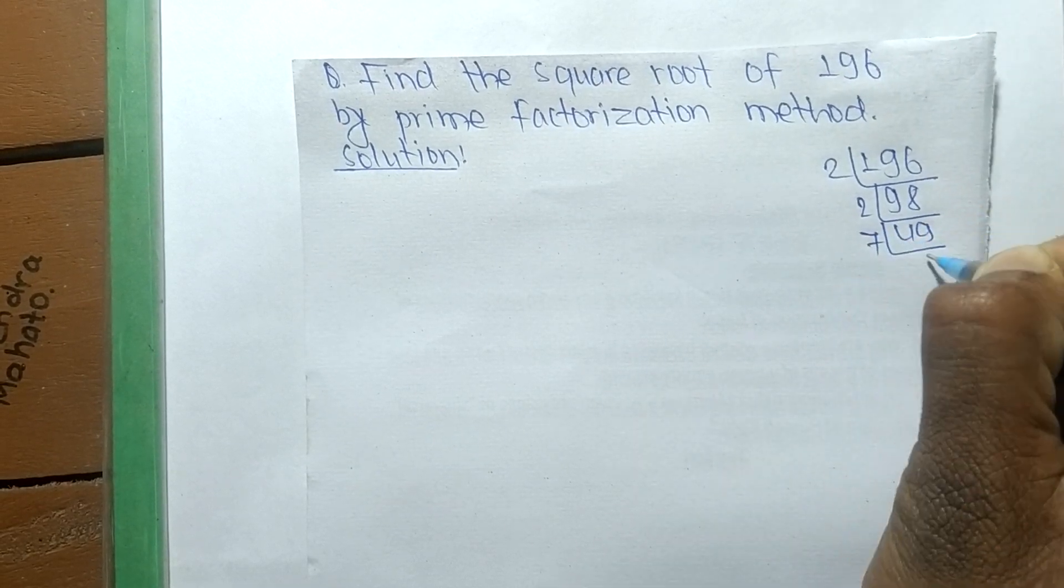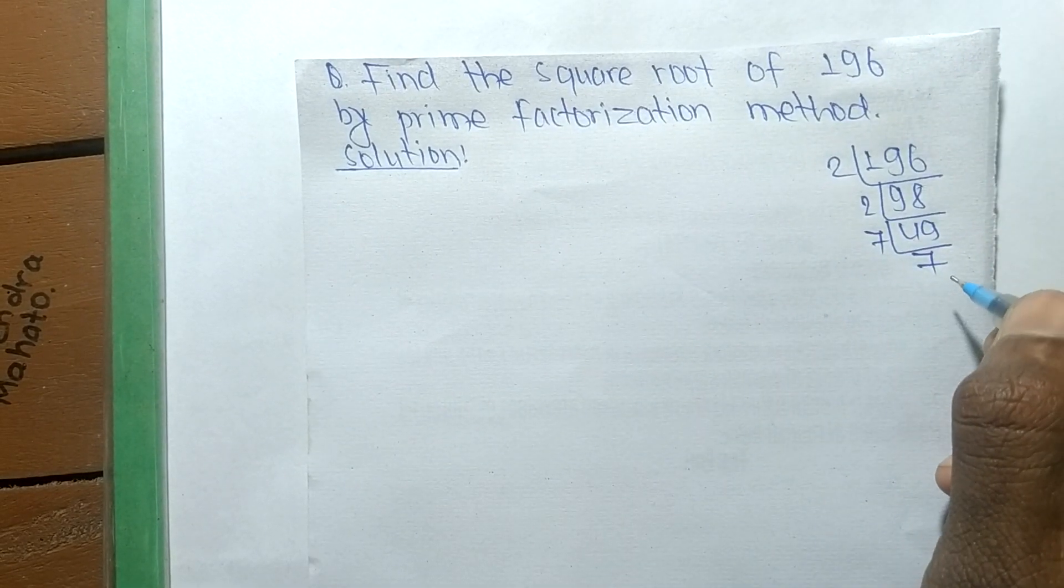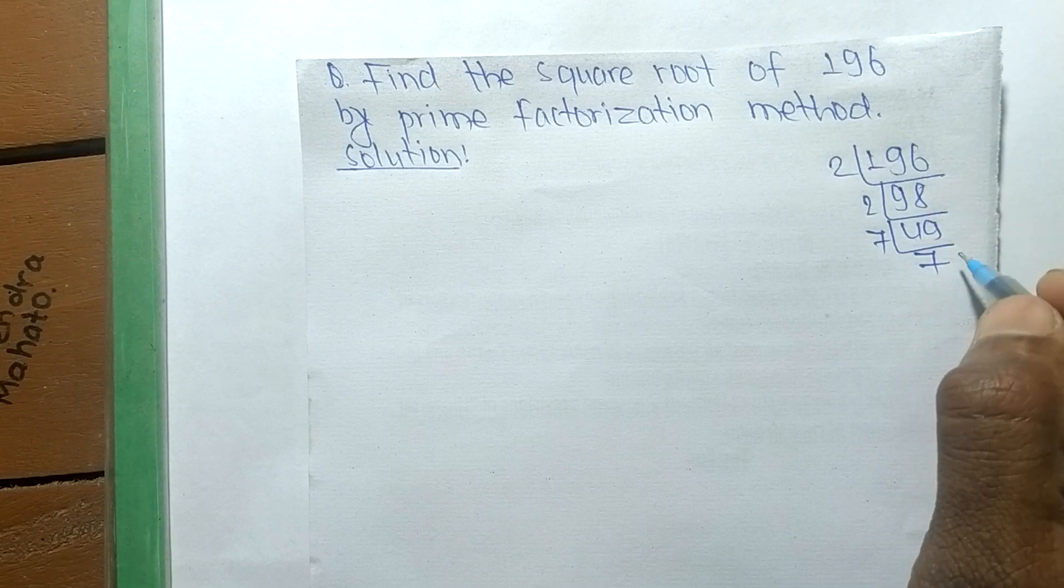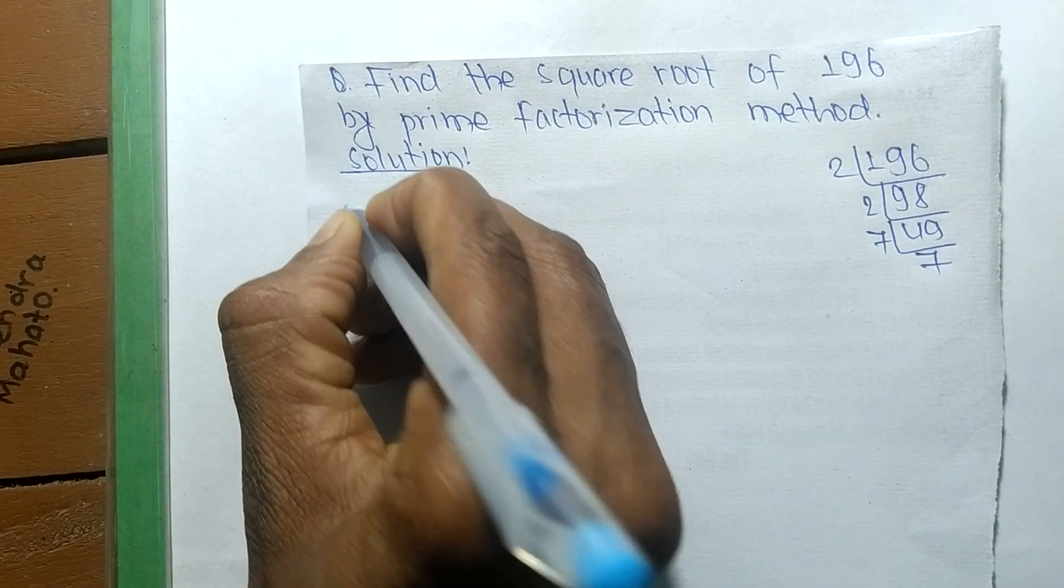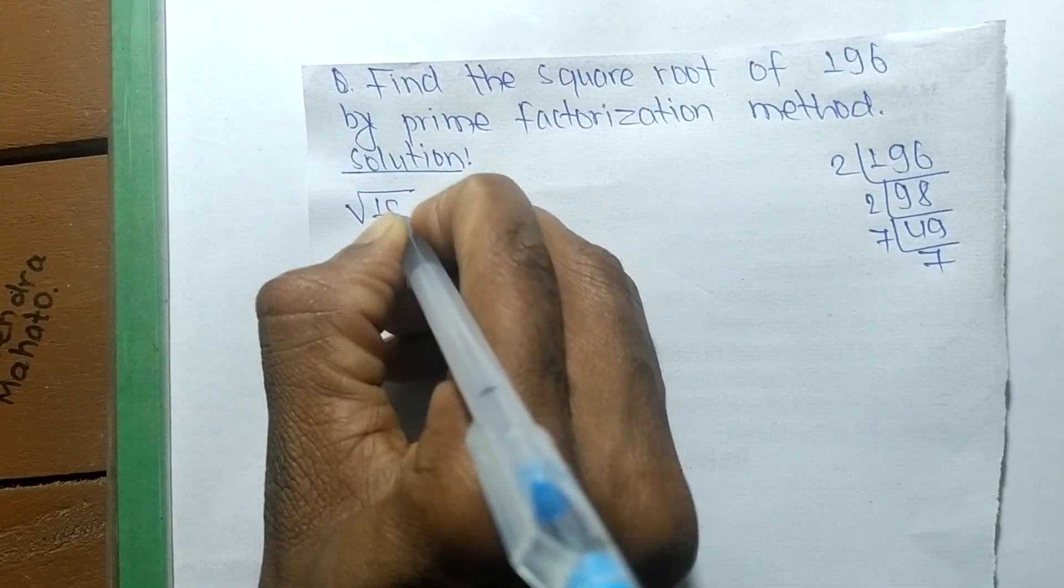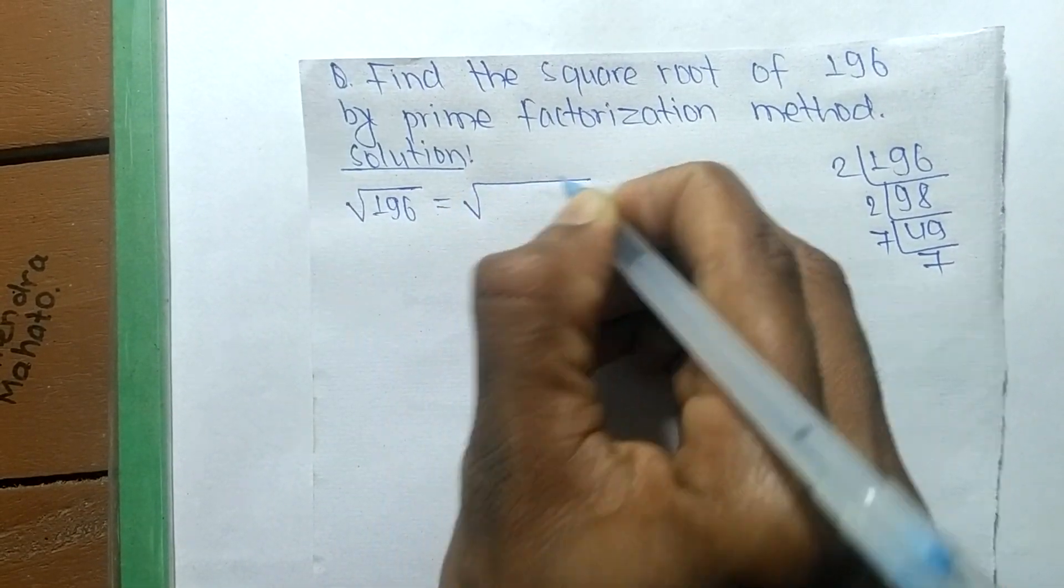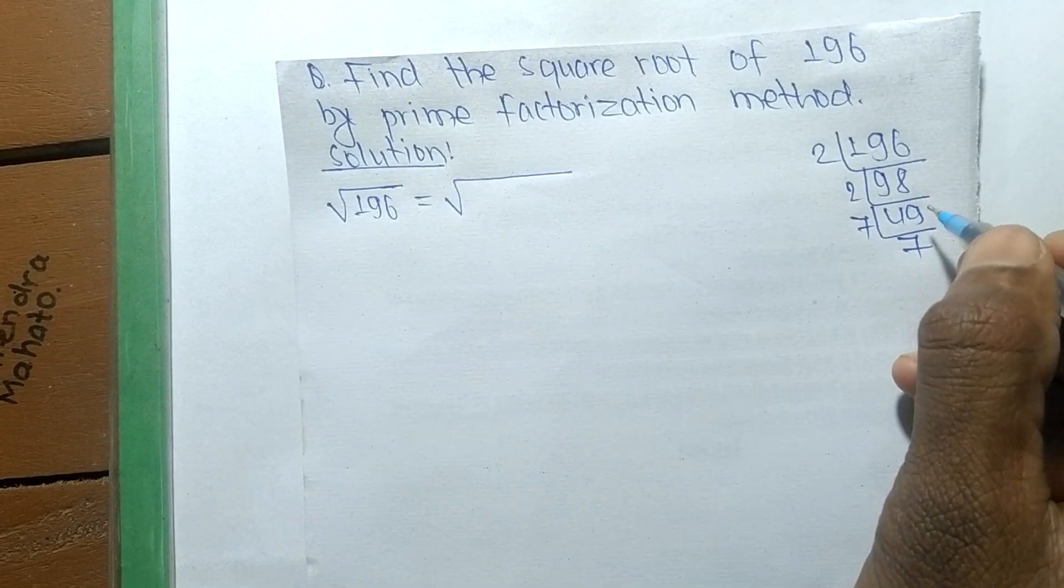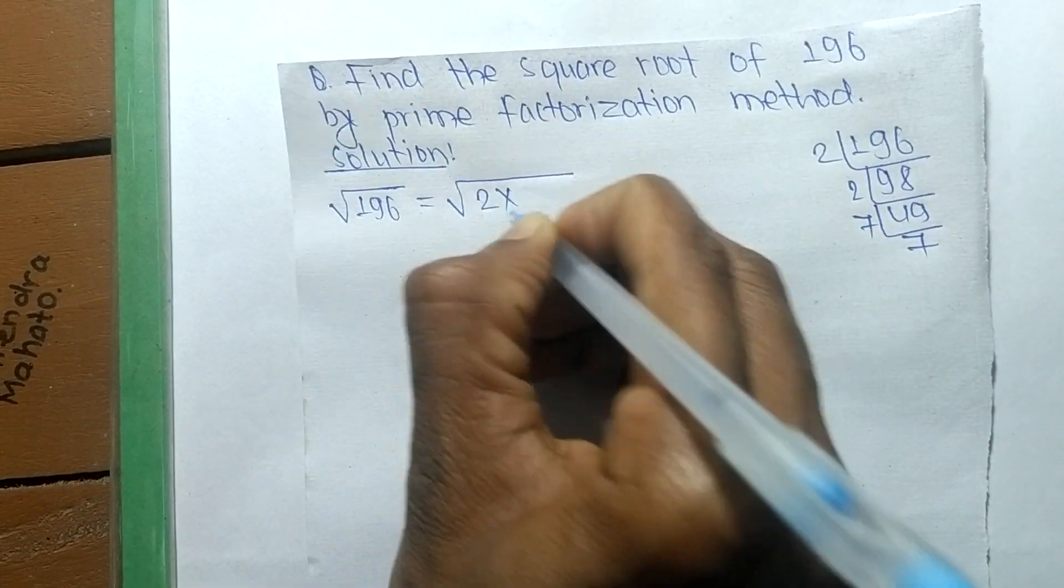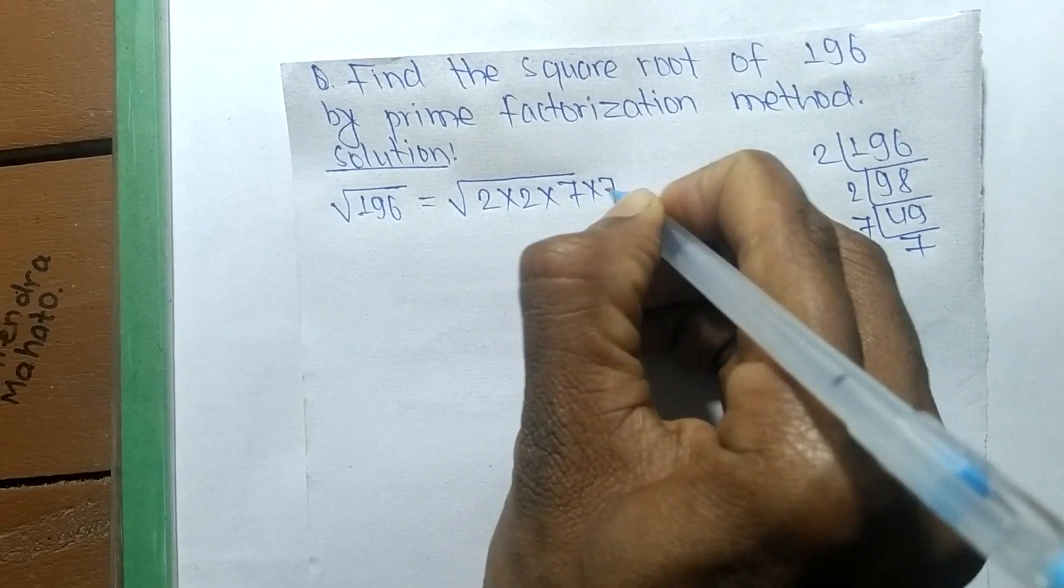Like as 7 times 7. So after finding out prime factors, now we find its square root. The square root of 196 is equal to, from this prime factor, we can write 2 into 2 into 7 into 7.